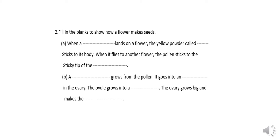Part B: a tube grows from the pollen. It goes into an ovule in the ovary. The ovule grows into a seed. The ovary grows big and makes the fruit. This is all explained in the lesson with the topic 'How a Flower Makes a Seed,' found in your booklet on page number 78.